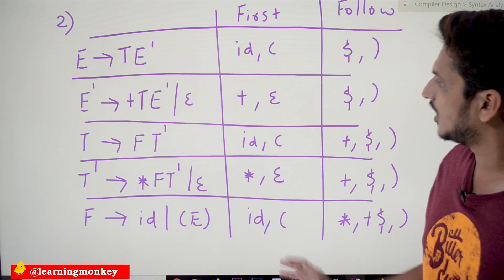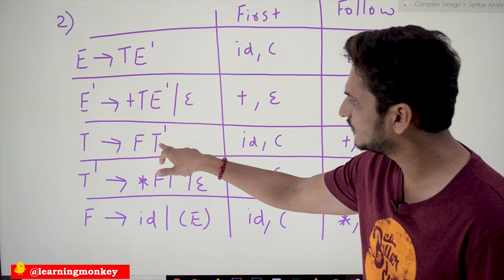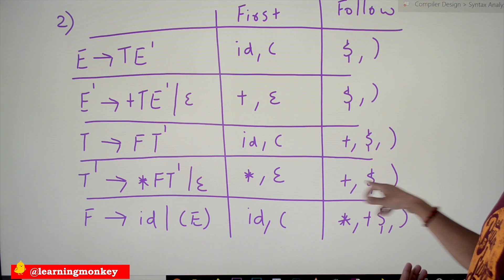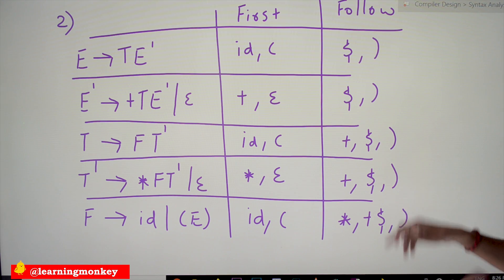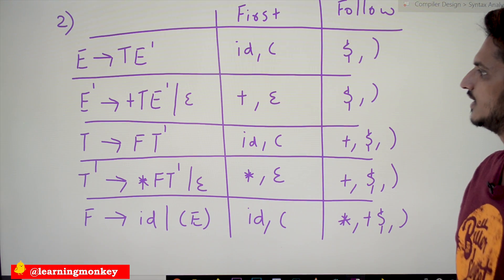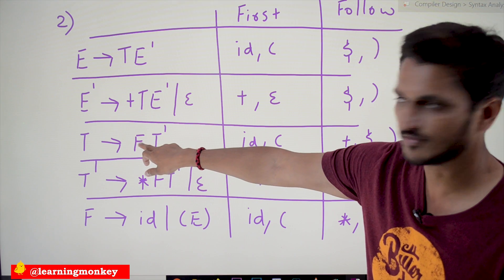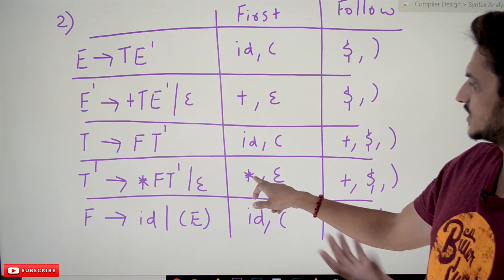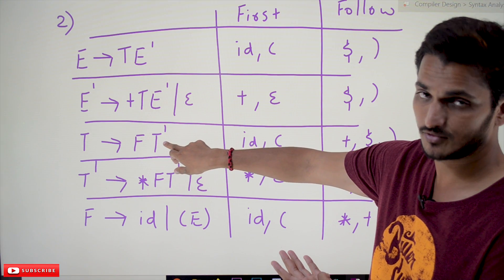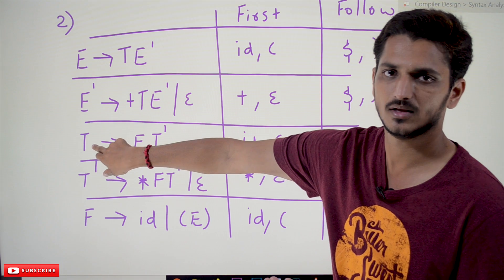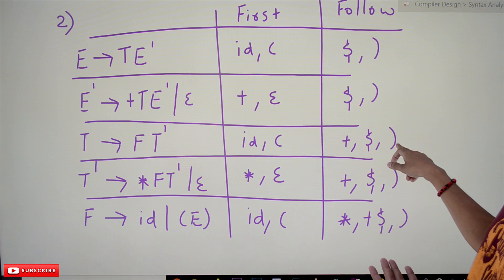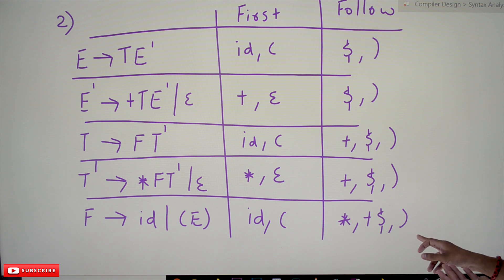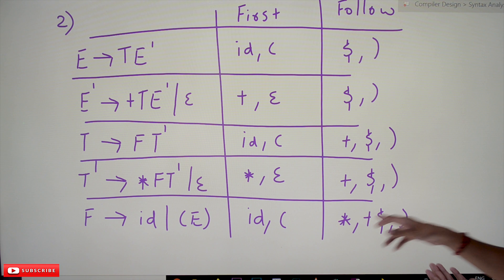Now we calculate FOLLOW of T-dash. On the right-hand side we find T-dash here. FOLLOW of T-dash means FOLLOW of T. FOLLOW of T is {+, $, )}. Coming to FOLLOW of F — where we find F is here. FOLLOW of F means FIRST of T-dash. FIRST of T-dash is {*, epsilon}. If you place epsilon in place of T-dash, we get FOLLOW of T, which is {+, $, )}. Along with star, FOLLOW of F is {*, +, $, )}.